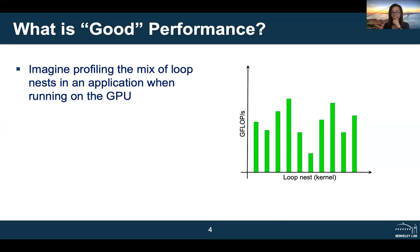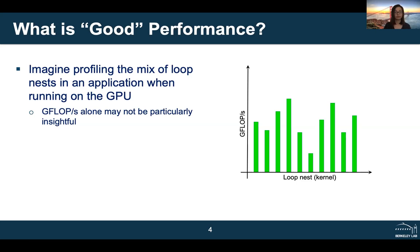Let's imagine that you took your application and profiled the mix of loop nests running on the GPU. For some arbitrary ordering of loop nests, you get completely random different flop rates for different loops — some perform at very high flop rates, some at very low flop rates. That means the flop rate alone is not particularly insightful. It doesn't really tell you whether you're getting good performance.